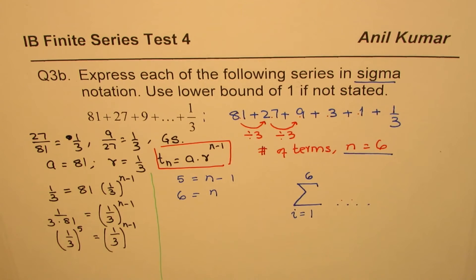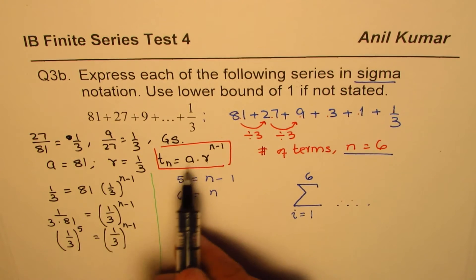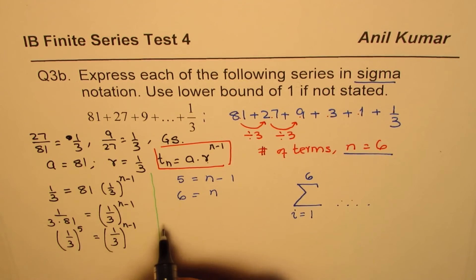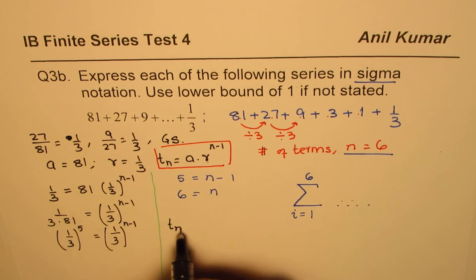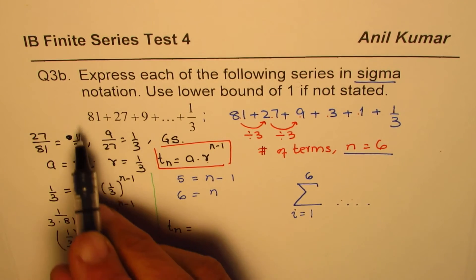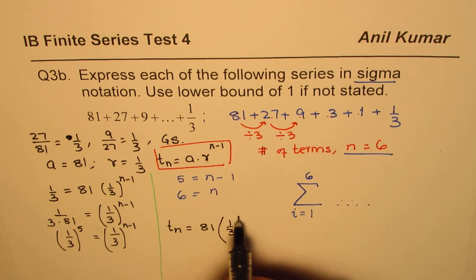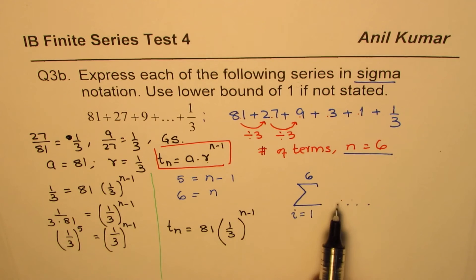So what we have here is that t_n is a times r to the power of n minus 1. We know all the values now. So we could write t_n as a, which is the first term, 81, and r, which is 1 over 3 to the power of n minus 1. So that could go here.